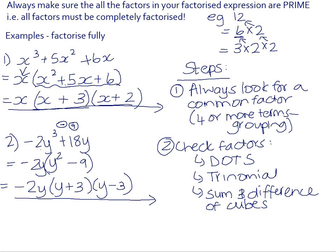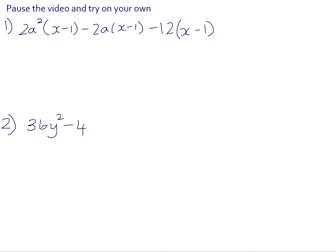In your homework book, there are two examples for you to try. So please pause the video and try those. In number one, we have a common factor of x minus 1. x minus 1 is a common factor. It's a common binomial to all the terms. There are three terms in this expression.